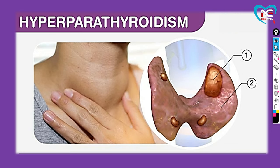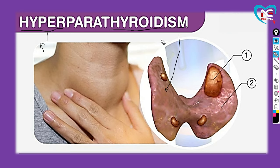Now we are going to see hyperparathyroidism. First of all, we have to know what it means. Hyper means increased. Thyroid means thyroid gland. Thyroidism means function of the thyroid gland. But here one more thing is added - that is 'para'. So what is para? It is also a sub gland.